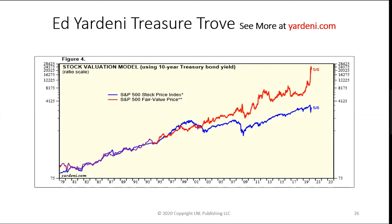Another great place for fundamental data is Ed Yardeni at Yardeni.com. He has a stock valuation model the Federal Reserve uses, showing the fair value price of the S&P in red versus the actual index. You can see when the blue line — stock prices — is overvalued, stocks come down; when we're way undervalued, stocks rally. Currently we're undervalued. That's the Federal Reserve model of stock prices and it's a great treasure trove of fundamental data.